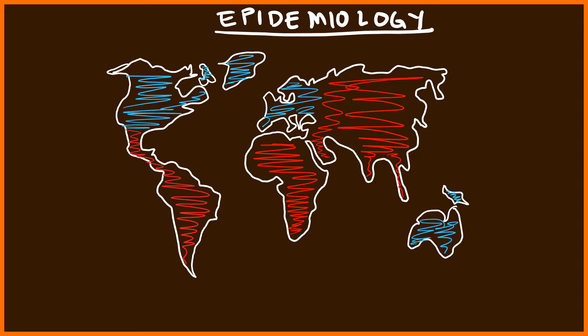In the first world, Hepatitis A virus is primarily associated with individuals traveling to third world countries. This is because of issues related to sanitation and regulations with food handling and distribution, which have played a large role in minimizing Hepatitis A virus in these first world countries.